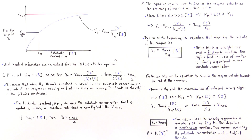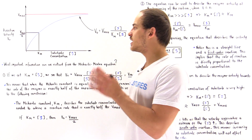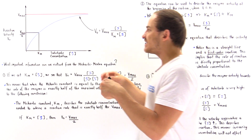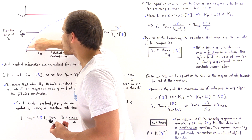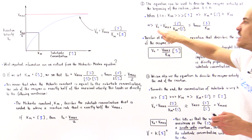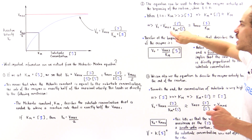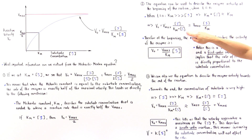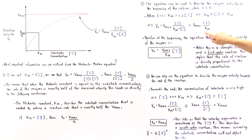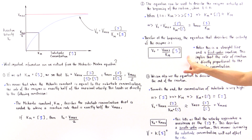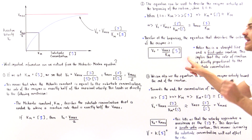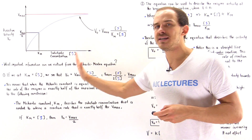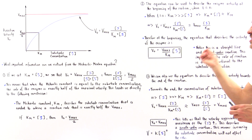We use this simplification to simplify the equation. V0 equals Vmax multiplied by [S] divided by KM plus [S], and because the denominator is approximately KM, this becomes approximately Vmax multiplied by [S] divided by KM. Rearranging, we can write this as (Vmax / KM) multiplied by [S]. This equation describes the activity, the rate of that enzyme, at the beginning of that chemical reaction.